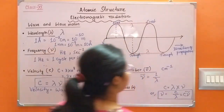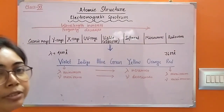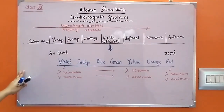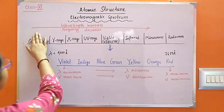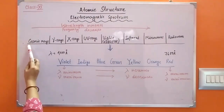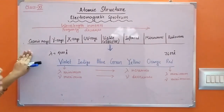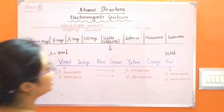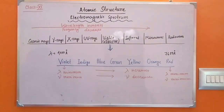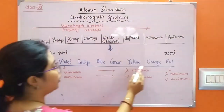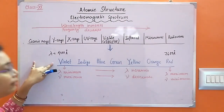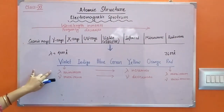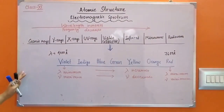This is the electromagnetic spectrum. The arrangement of different types of electromagnetic radiations in increasing order of their wavelength and decreasing order of frequency is called the electromagnetic spectrum. From left to right, wavelength increases and frequency decreases. Cosmic rays have minimum wavelength and maximum frequency, while radio waves on the right have maximum wavelength and minimum frequency. One region is the visible region, which the human eye can detect. This visible spectrum has seven colors: violet, indigo, blue, green, yellow, orange, and red. Violet color has minimum wavelength and maximum frequency, while red color has maximum wavelength and minimum frequency.